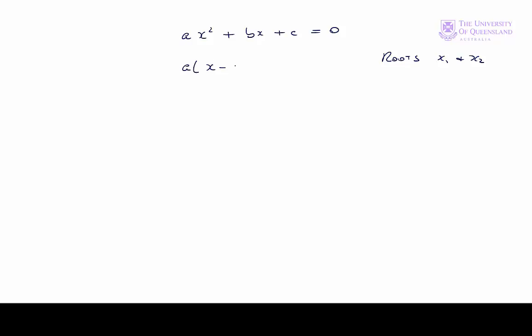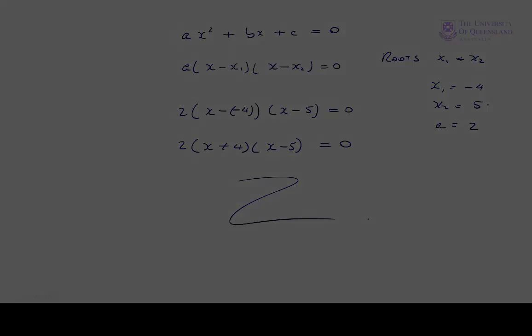We had x1 equals minus 4, x2 equals plus 5, and a equals 2. So we'll have 2 times x minus minus 4 times x minus 5 equals 0. That is 2 times x plus 4 times x minus 5 equals 0. So there we go.